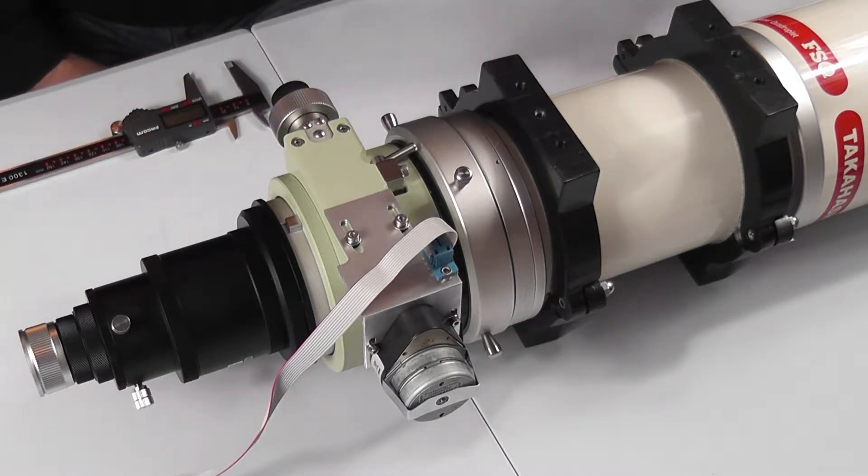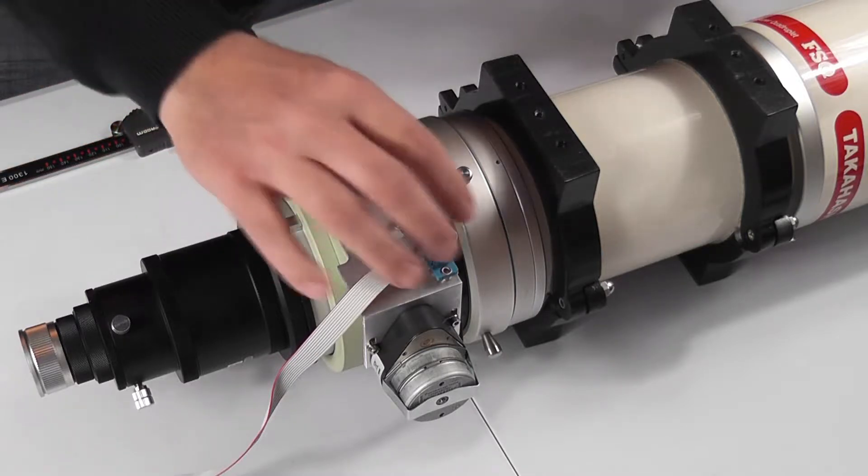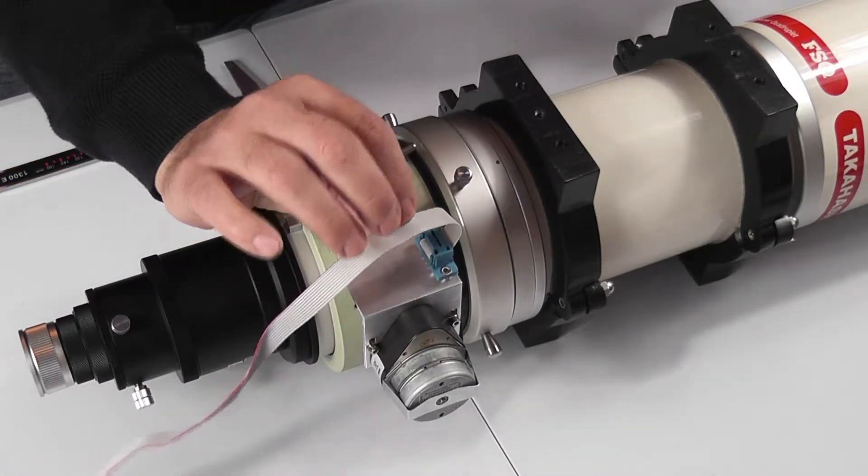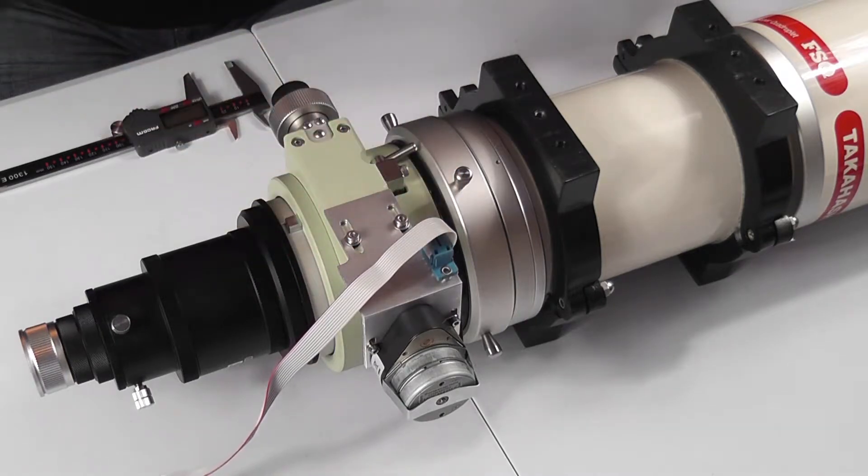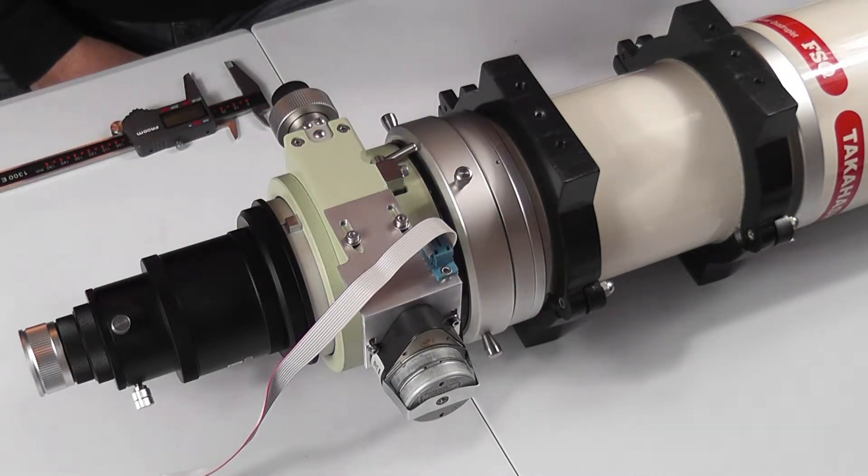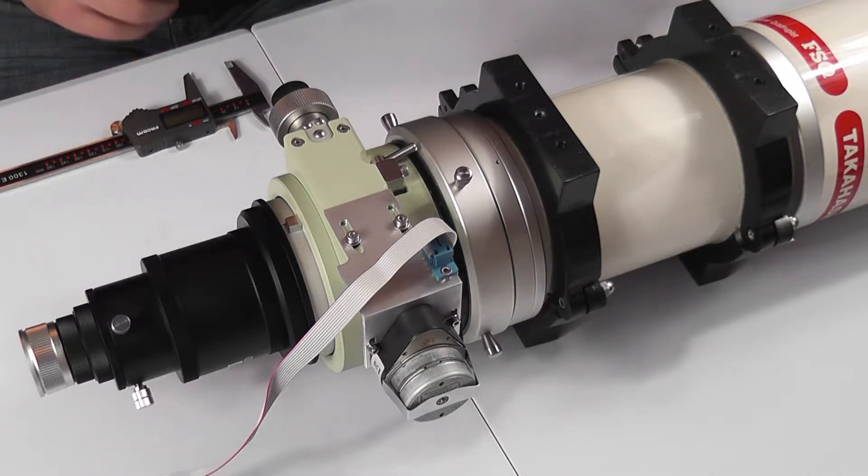So once we've got that done, we've connected the flat ribbon cable lead that comes with the Lakeside focuser kit, connected the controller to a 12-volt power supply. When we switch on, the first thing that we're going to do is we're going to test to make sure which direction the focuser runs in.